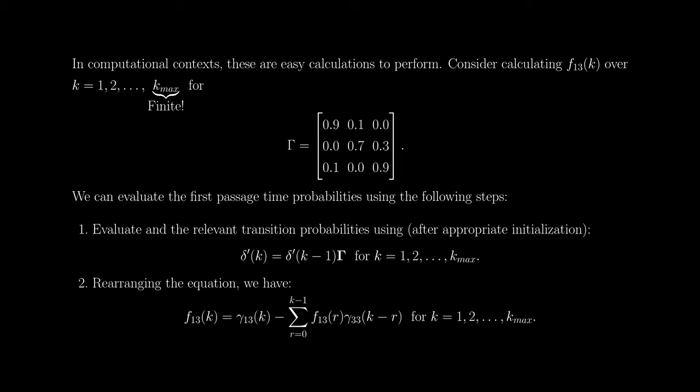Once we have those transition probabilities, we use our recursive relation to evaluate the first-passage time probability. We rearrange the expression to arrive at the explicit recursive expression: the probability of first passage from state one to state three in k steps is just the transition probability from state one to state three in k steps, minus the sum over r from 0 to k−1 of the first-passage probability from one to three in r steps multiplied by the transition probability from state three to three in k−r steps.